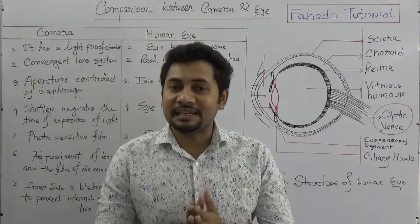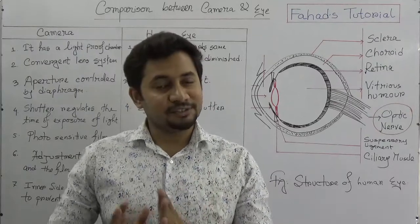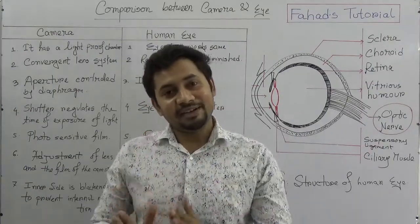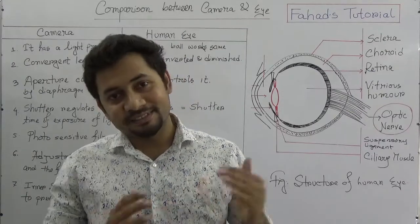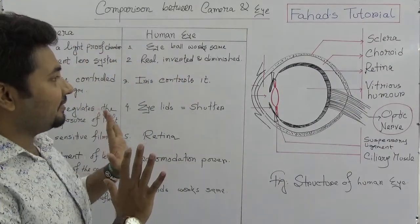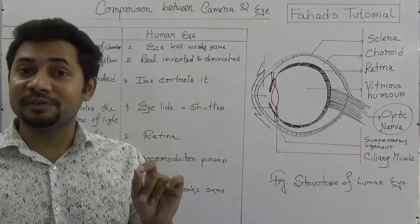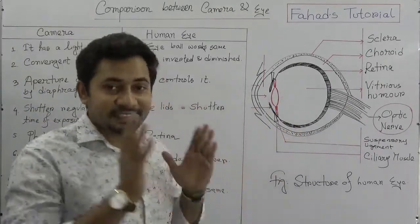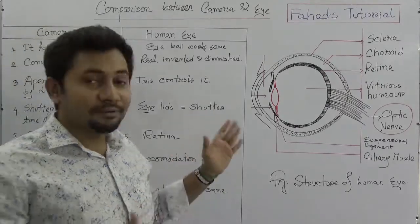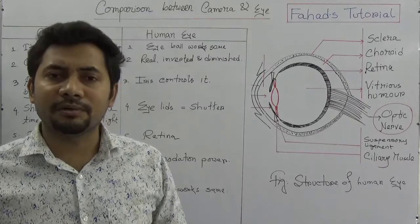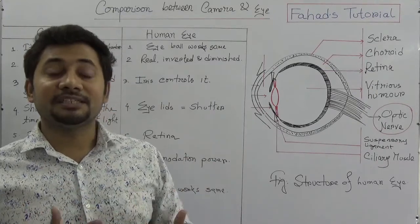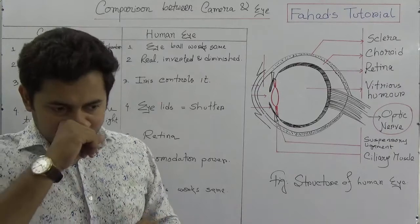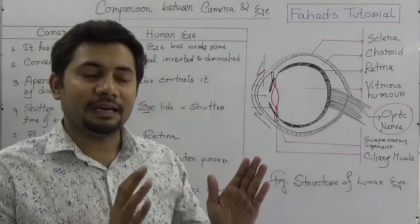Salam alaikum rahmatullah. Those who already studied about the structure of human eyes and also the structure of camera know there are some comparisons between the camera and the human eyes. In this class we cover that comparison. I already uploaded a video on the structure of human eyes, and these figures were part of that. The parts include the iris, pupil, cornea, conjunctiva, sclera, choroid, retina, fovea centralis, ciliary muscle, and suspensory ligament.